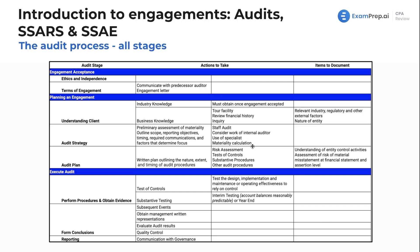When we get to our audit plan — as opposed to the overall strategy — we want a written plan outlining the nature, extent, and timing of the audit procedures. These three factors are important and will come up repeatedly throughout the course. Which procedures are we doing? How much are we doing them? And when are we doing them? In our planning stage, we also want to assess risk, consider tests of controls and substantive procedures, and document the understanding of the entity's control activities and the assessment of the risk of material misstatement at the financial statement and assertion level.